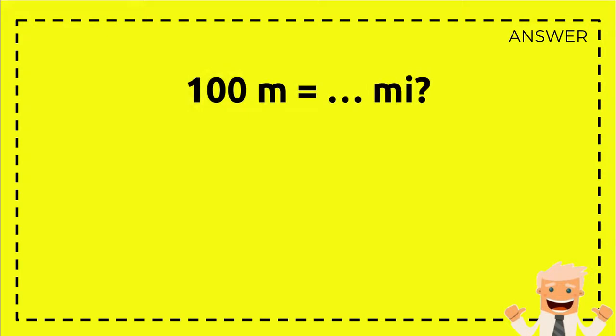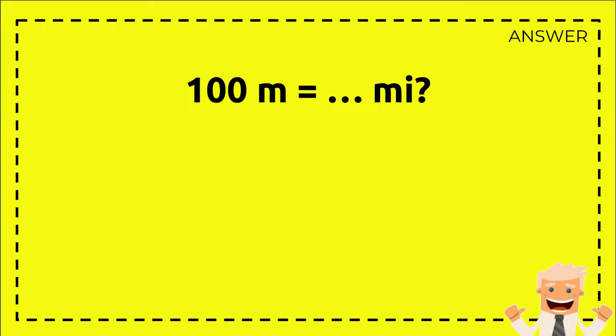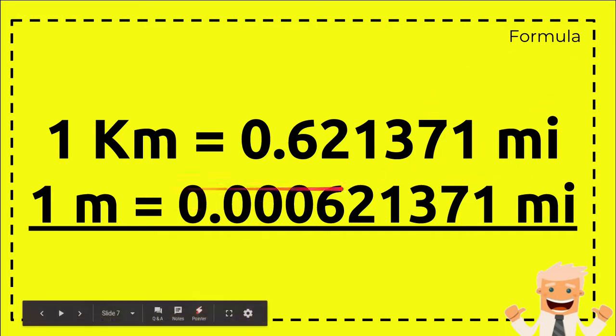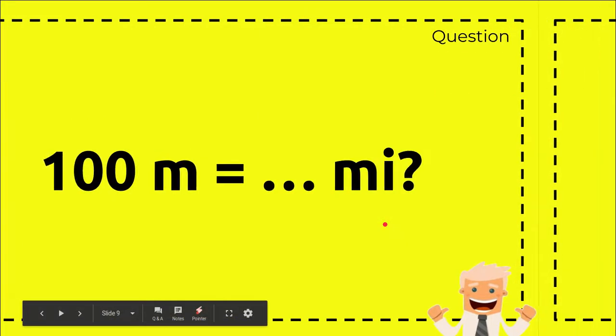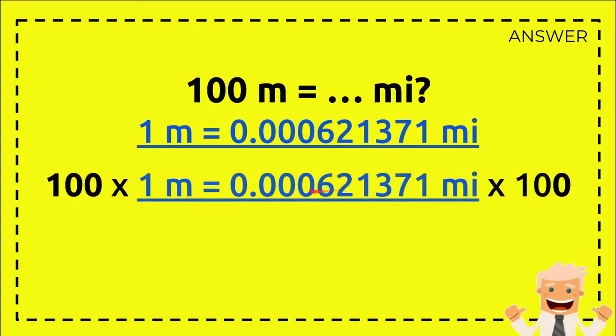So this is the answer. First, just write the question: 100 meters equals how many miles? And then you put the equation - this is the exact equation we have from here. The equation, the formula, and then you write the formula again.